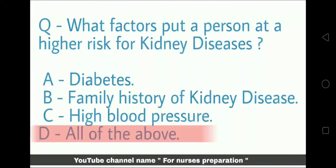People who have a family history of kidney diseases, high blood pressure, diabetes, etc. have higher chances of getting kidney diseases. The correct answer is D — All of the above.